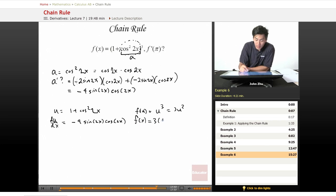So f'(x) = 3(1 + cos²(2x))². And we know that dy/dx equals our dy/du term, which is 3(1 + cos²(2x))², times our du/dx term, -4sin(2x)cos(2x).